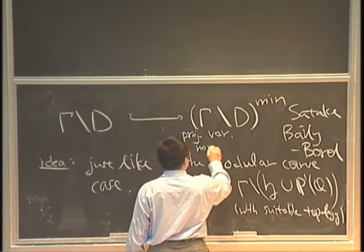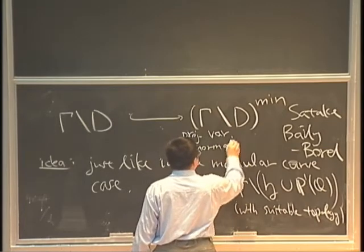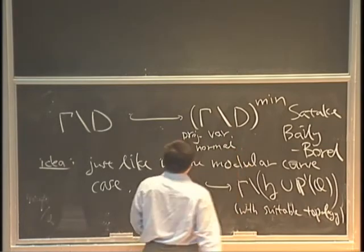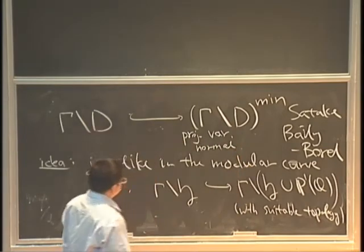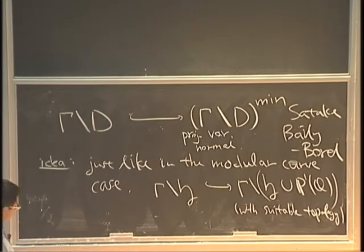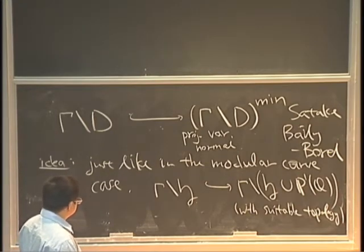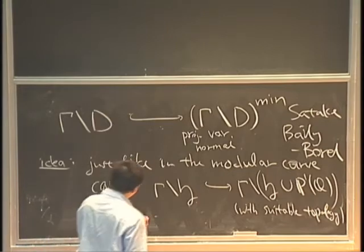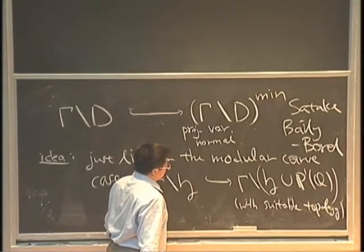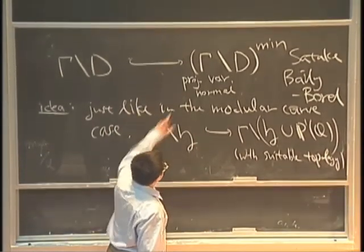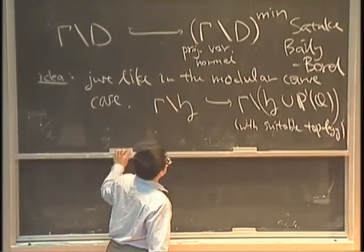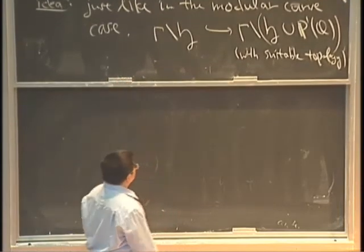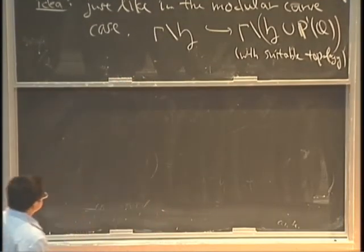Just like in the modular curve case, we have something like the upper half-plane quotient by some gamma, and we try to compactify it by adding some cusps. We take P^1(Q) and put them together. For some suitable topology, this compactifies the space. This compactification turns out to be a projective variety, and importantly, it is normal and carries a lot of scalar-valued modular forms.